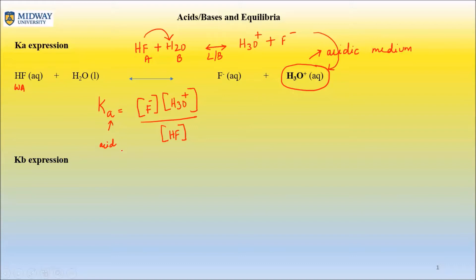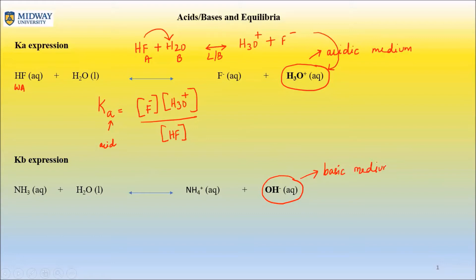Now for the Kb expression. If one of your products is OH-, then what we have is a basic medium. Anytime you have a basic medium, you have a basic expression: Kb equals the ratio of concentration of products over concentration of reactants, and water is not included because it is a liquid. B here stands for base.